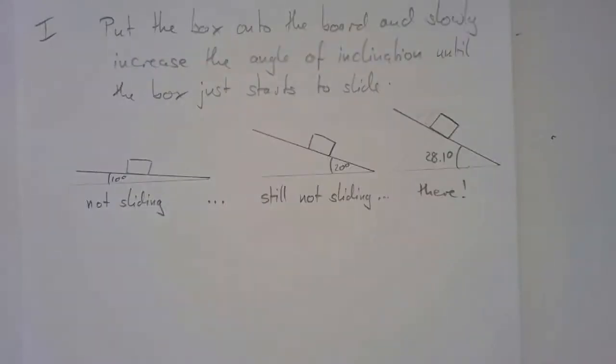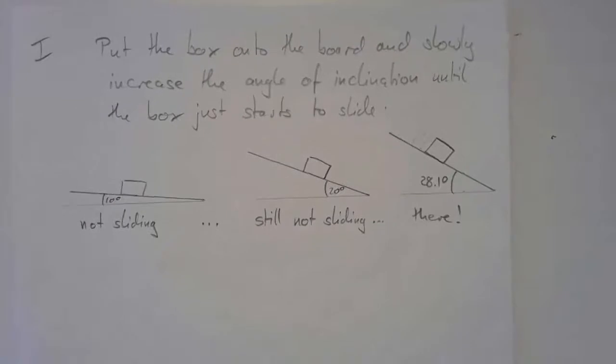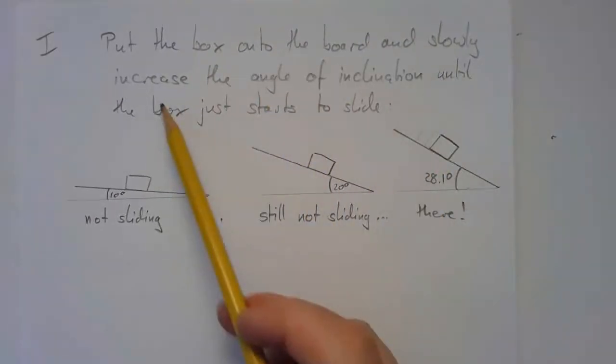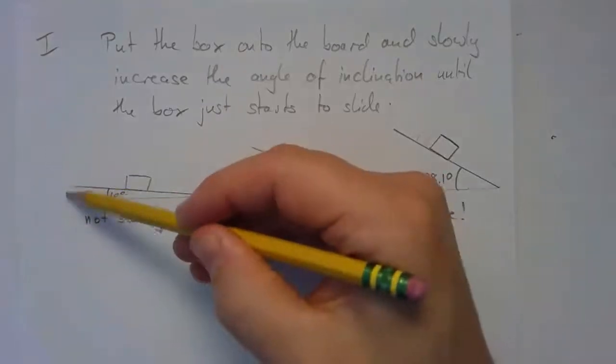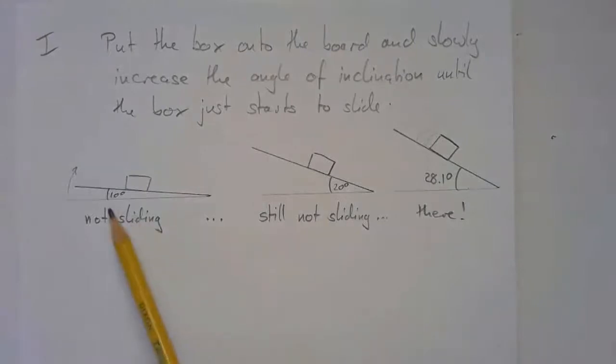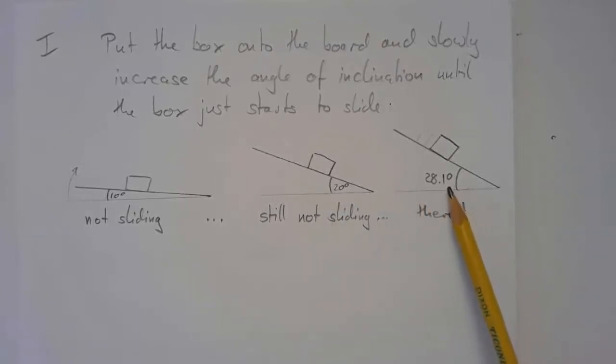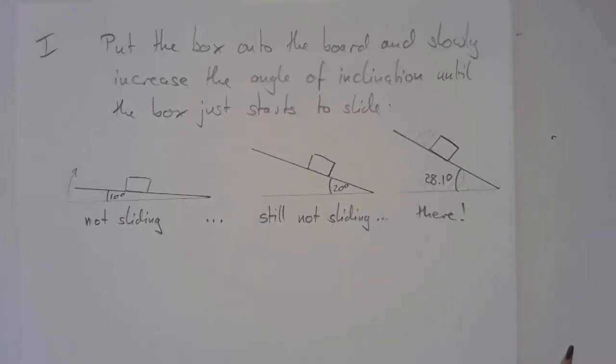Let's do this. So, here's our first method. We're going to put the box onto the board, and we're going to slowly increase the angle of inclination. So, this is my board, here's the view from the side. I'm going to keep it fixed here, and I'm going to raise this bit up more and more and more. So, at 10 degrees, nothing's moving. We have 20 degrees, still nothing's moving. And, there we go, 28.1 degrees, or whatever the value. That's where it starts sliding.